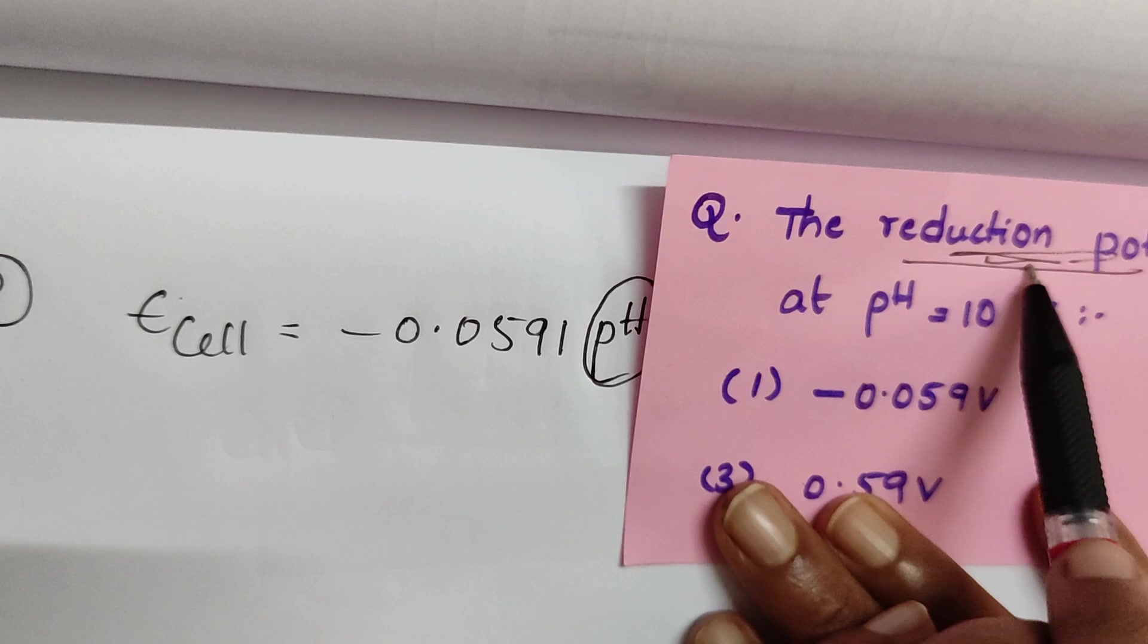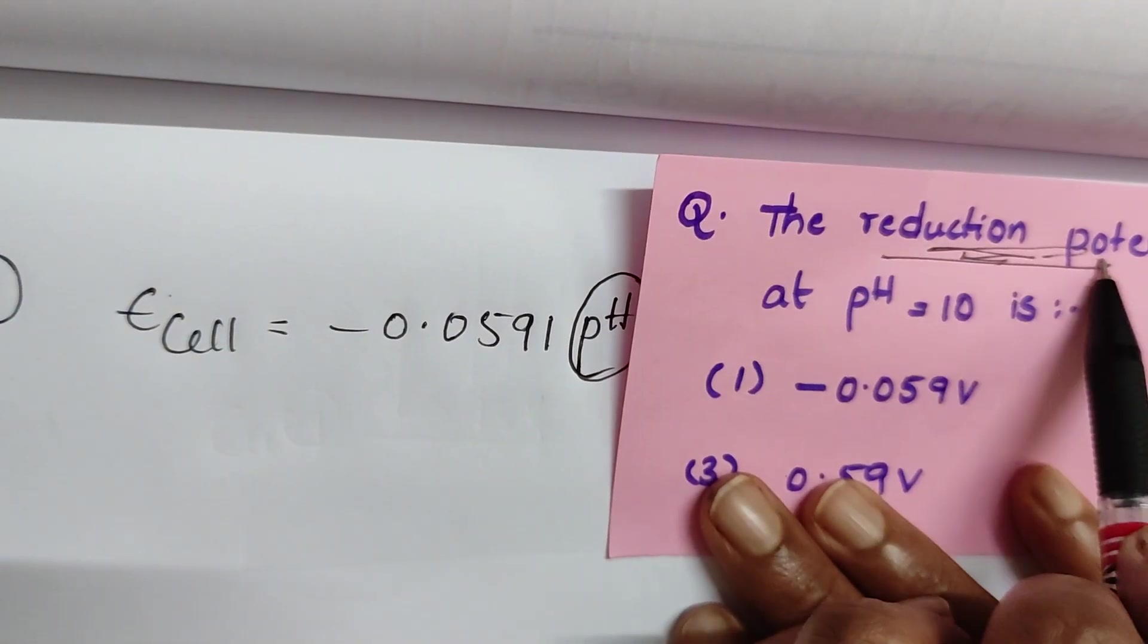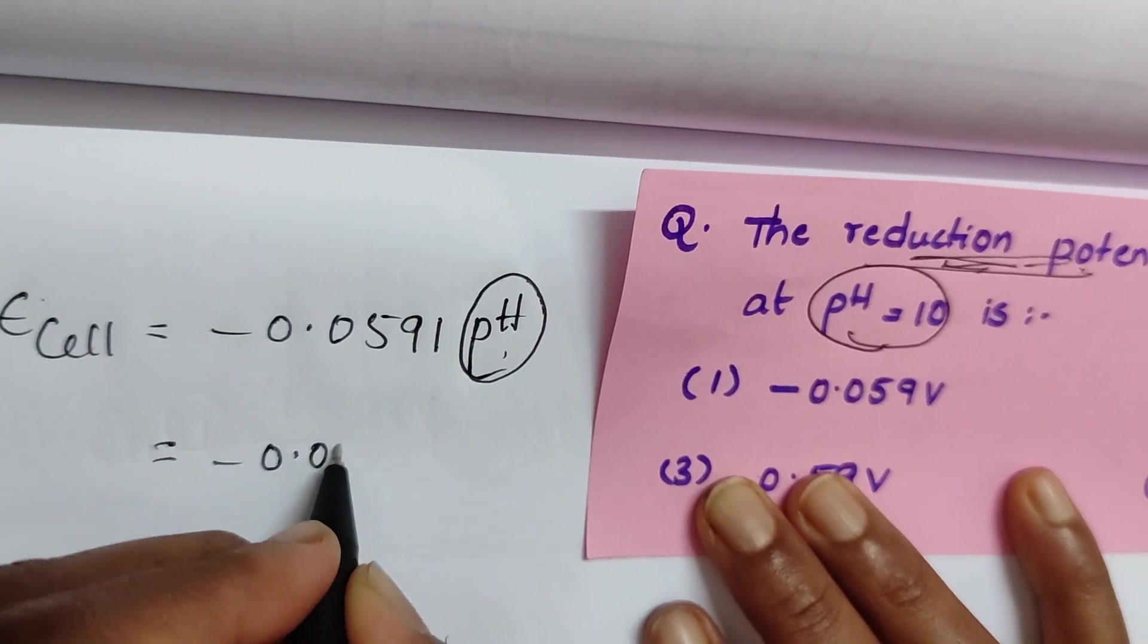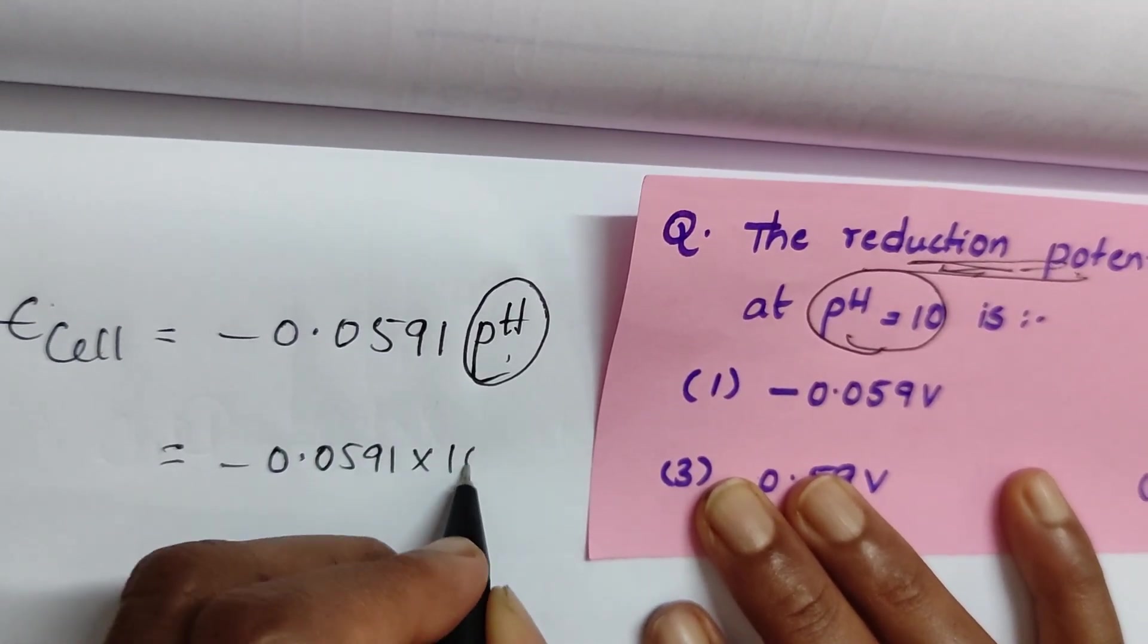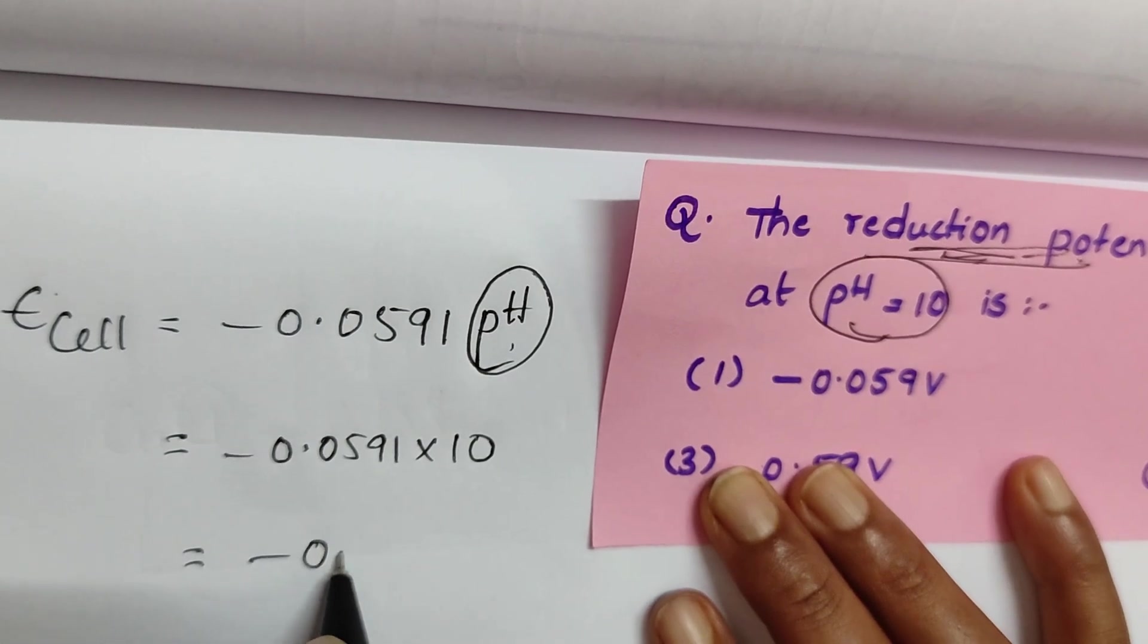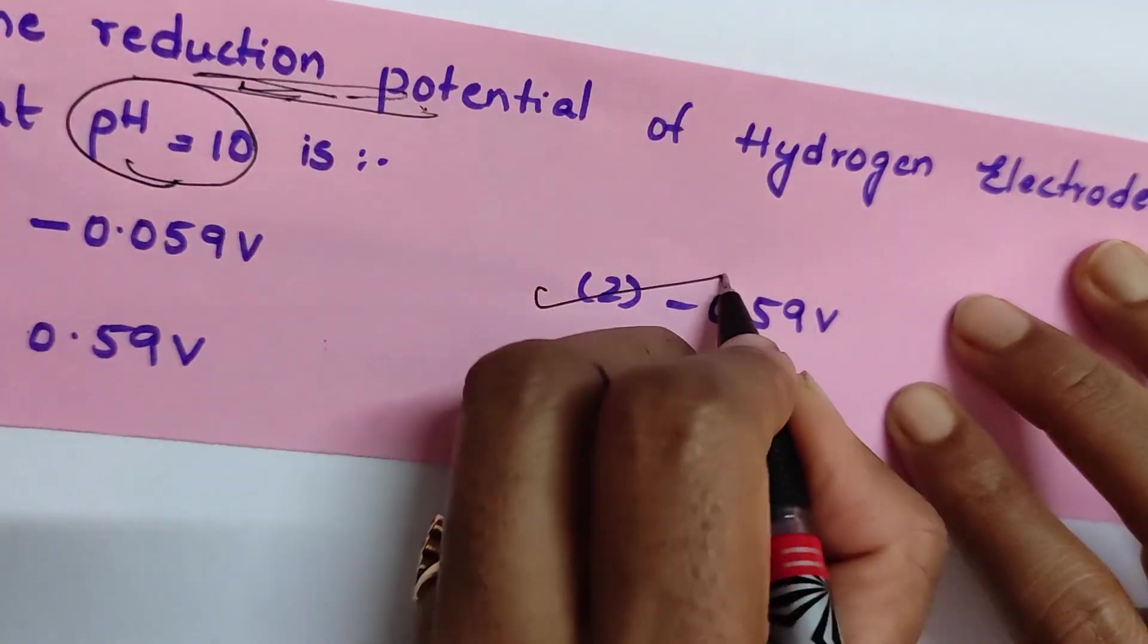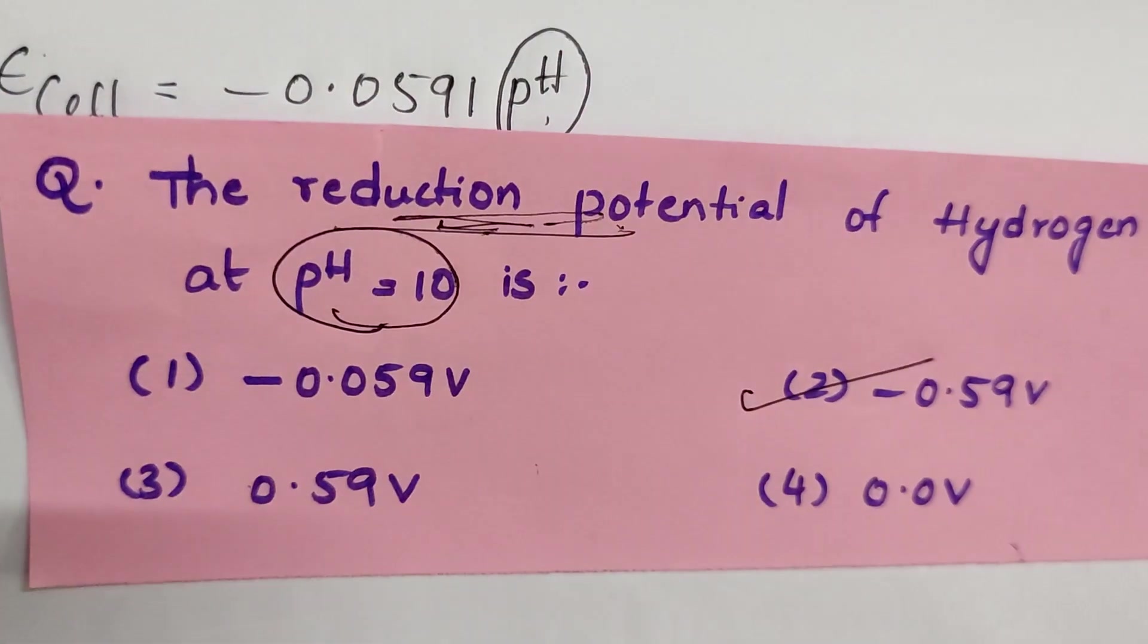Because cathode reduction potential is given. pH value is 10. Substitute here: minus 0.0591 times 10. Then you will be getting 0.591 volt as our answer. That is option number 2 is the correct answer.